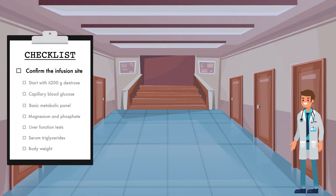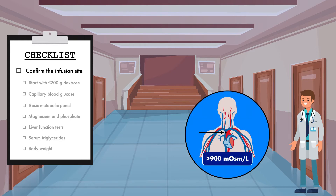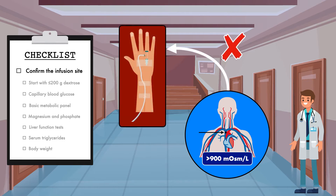The first item on the list is to confirm the infusion site. This topic is discussed in more detail in my video on peripheral vs. central parenteral nutrition. I just want to emphasize that you absolutely need to know that the patient has the appropriate venous access for the formulation you have prepared. If the parenteral nutrition has been prepared for a central venous catheter with an osmolarity greater than 900 milliosmoles per liter, and you try to run it through a peripheral vein, you will exceed the osmolarity that vein can tolerate.